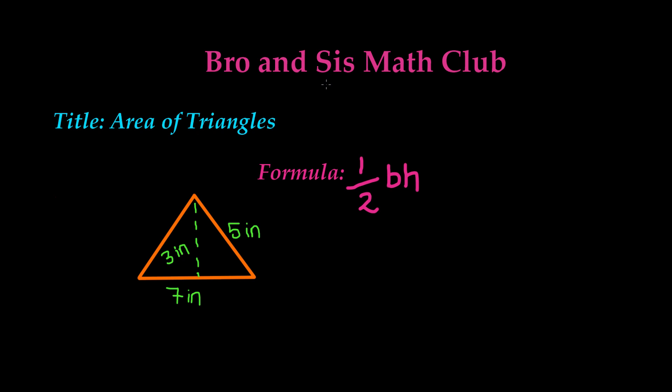The formula to find the area of any triangle is 1 half times base times height. So in order to find the area of this given triangle, we need to find the value of the base and the height.